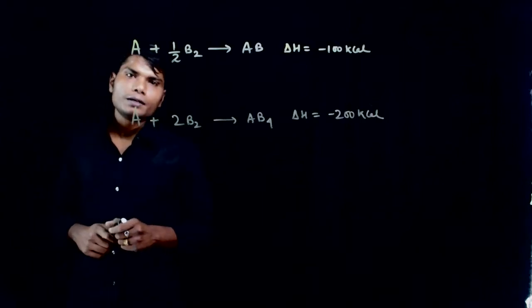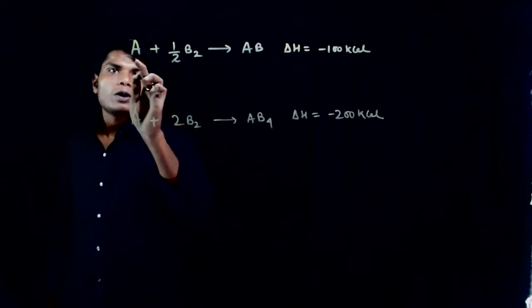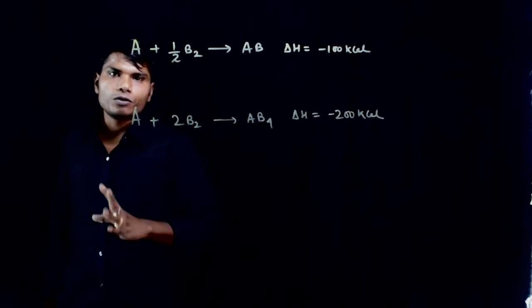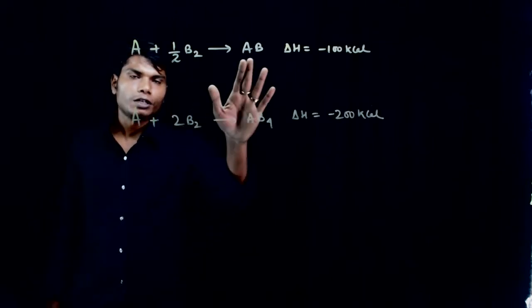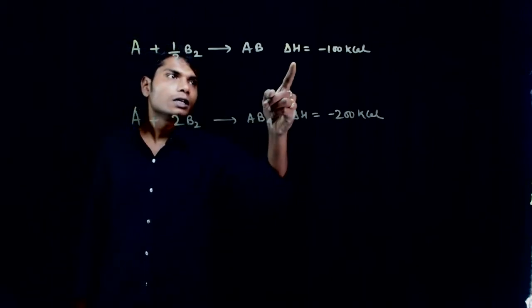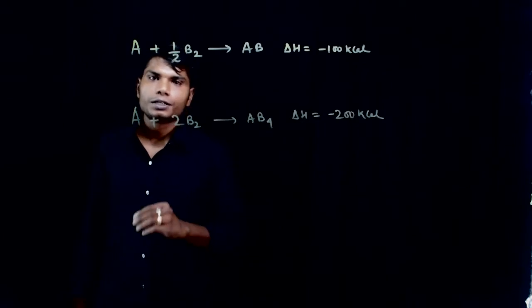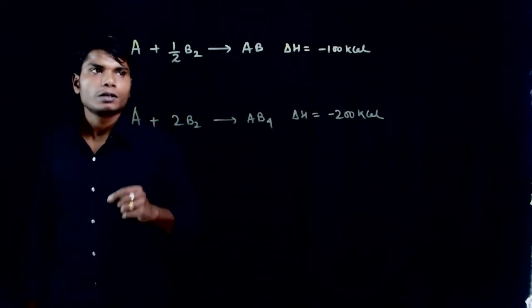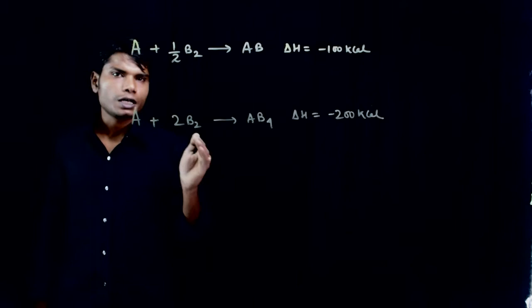This question is, if one mole of A reacts with half mole of B2, AB you get and delta H minus 100 kilocalorie is liberated, delta H is negative.